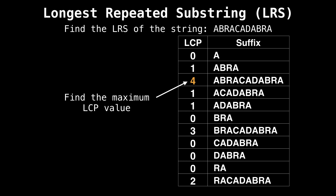Intuitively, we want to do this because we know that the suffixes are already sorted. So if two adjacent suffixes have a large longest common prefix value, then they share a good amount of characters with each other. We also know that if the LCP value at a certain index is greater than zero, then the string shared between the two adjacent suffixes is guaranteed to be repeated, because it is common between two suffixes, each of which start at different locations in the string.